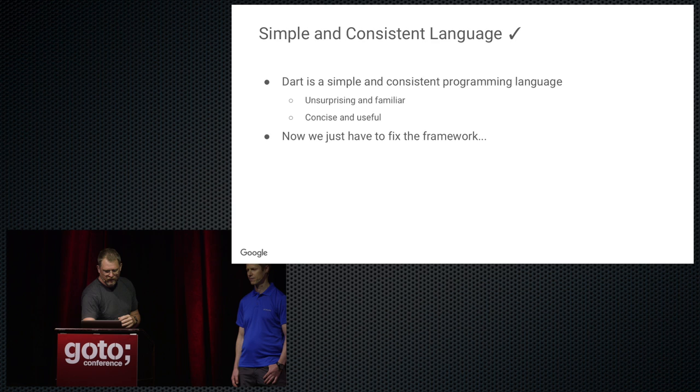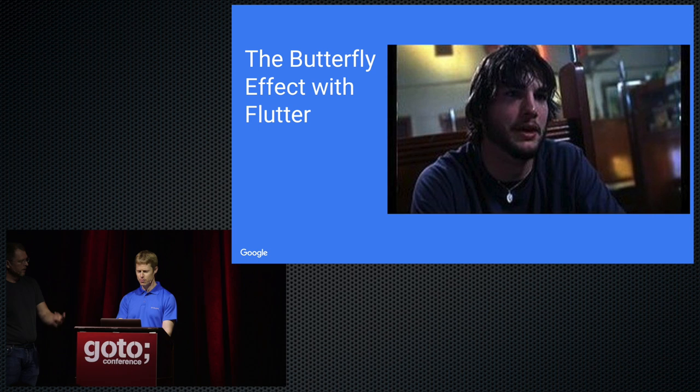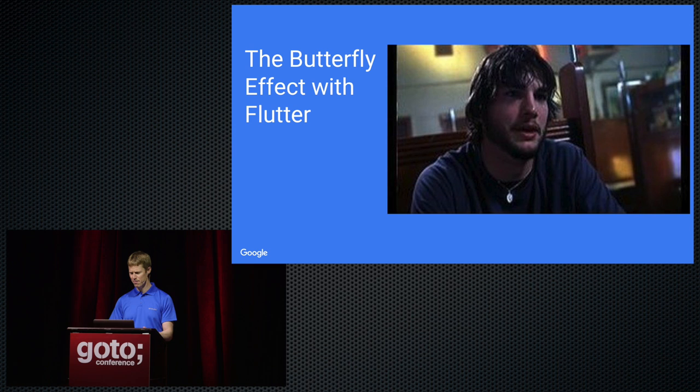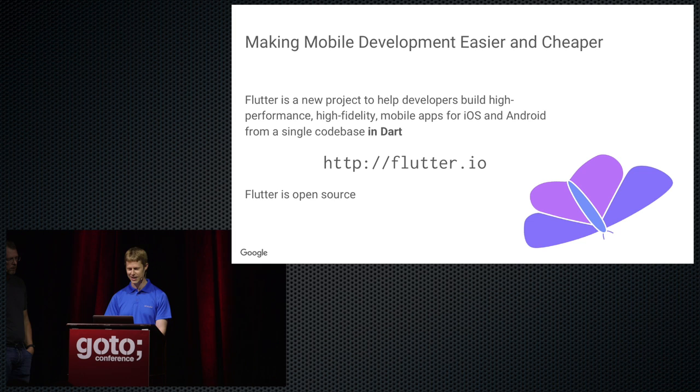The framework is called Flutter — we're going to give you a brief overview and a demo of it running for real. It started out as a project from the Chrome team, who wanted to make something simpler than the browser. They built a simplified DOM model, but it got too complicated, so they replaced it with more Dart code. Eventually it ended up with only a C++ low-level graphics API at the bottom, with the rest implemented in Dart.